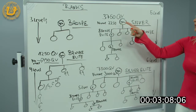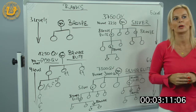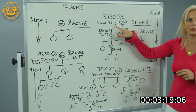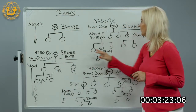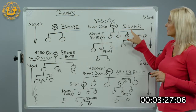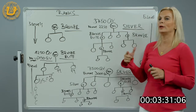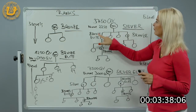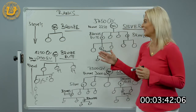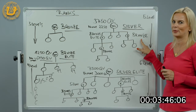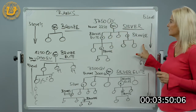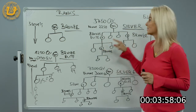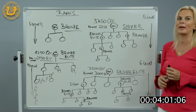Moving on to Silver: you need 3,750 Qualification Volume, four people frontline, and no more than 2,250 QV can come from any one leg. Out of those four frontline people, one needs to become a Bronze Elite and one needs to become a Bronze. Meet those requirements and you are a Silver. Silver unlocks five levels of payments in your compensation plan, so you get paid five levels down.